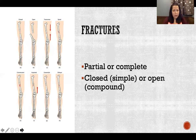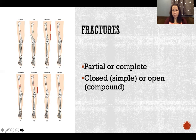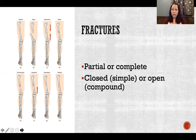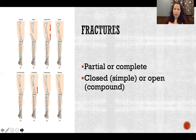Fractures. There are many different types but this is not a pathology class, so we won't get into all of them. Any fracture can be determined as partial or complete — partial means it does not break the bone into more than one piece (like a hairline fracture), while complete means the fracture goes completely through and breaks the bone into two or more pieces. Also, any fracture can be closed or open (synonymously, simple or compound) — this simply refers to whether the bone broke through the skin. A closed fracture means the bone did not break through the skin; an open fracture means a piece of bone has broken through the skin.